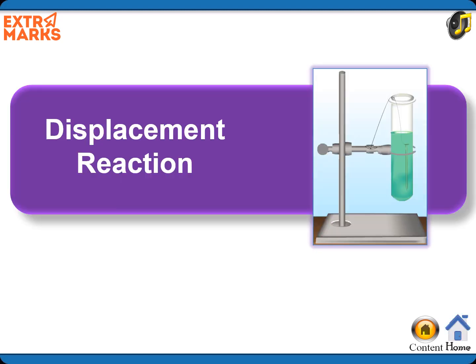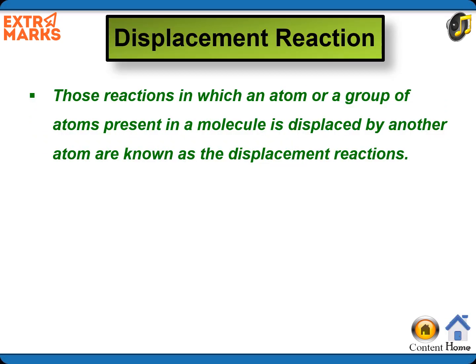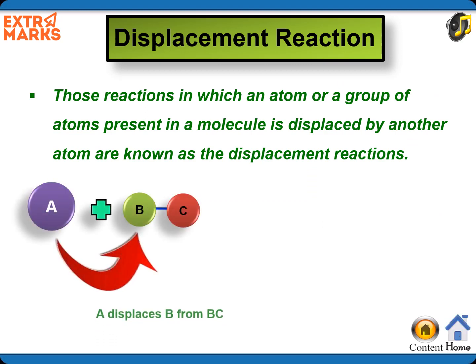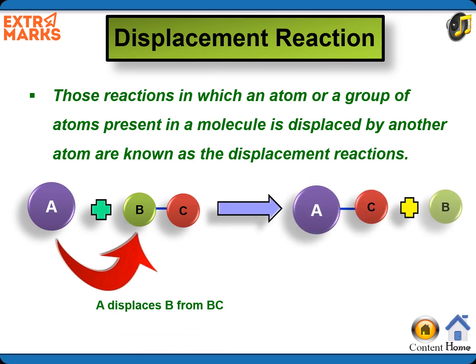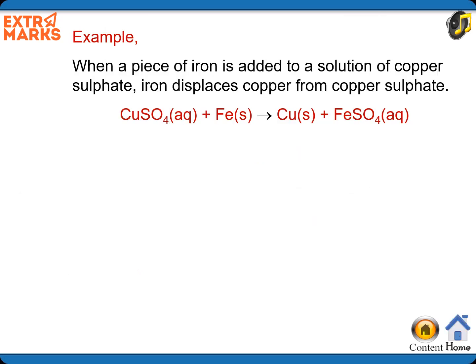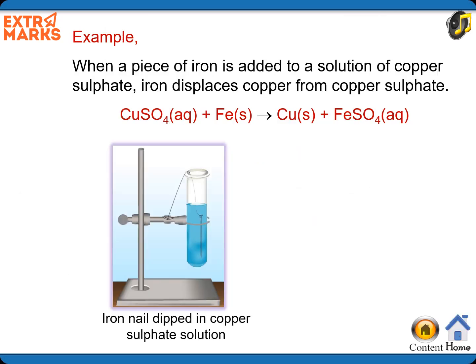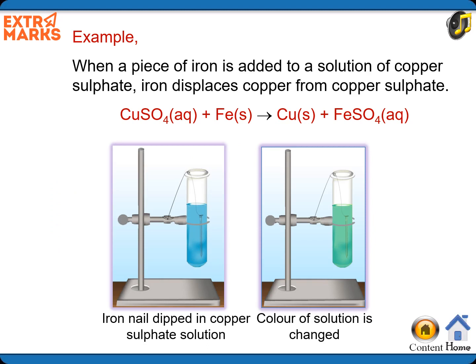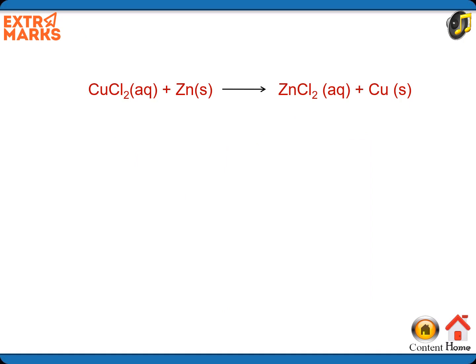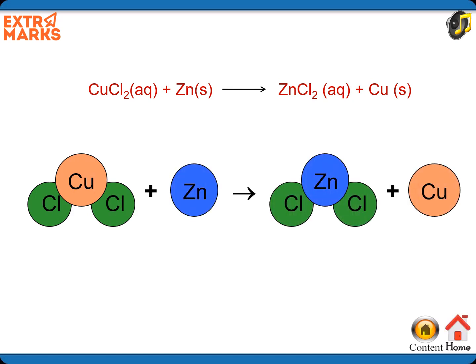Displacement reaction: those reactions in which an atom or a group of atoms present in a molecule is displaced by another atom are known as displacement reactions. For example, when a piece of iron is added to a solution of copper sulfate, iron displaces copper from copper sulfate. When a strip of zinc metal is placed in a solution of copper chloride, zinc chloride solution and copper are formed.